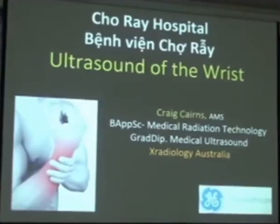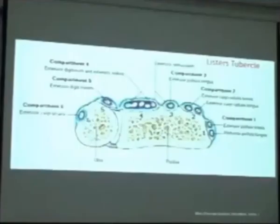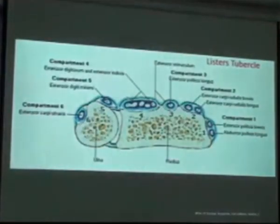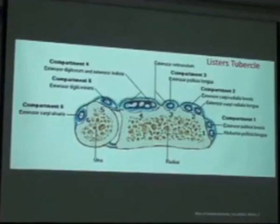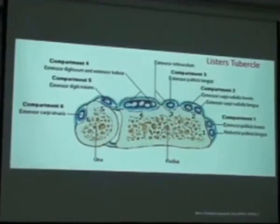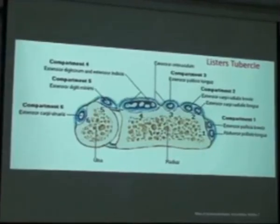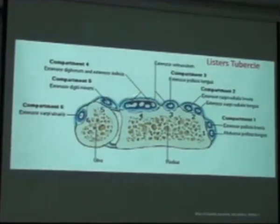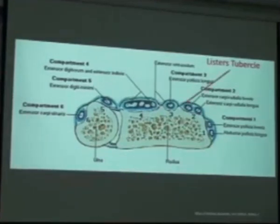We're going to speak about ultrasound of the wrist. It's very important that we understand the anatomy of the area we're looking at. The most important diagram I've found is from Netter, which is brilliant because it separates all of the extensor tendons of the wrist into compartments. The key bony landmark we need to be very familiar with is Lister's tubercle.